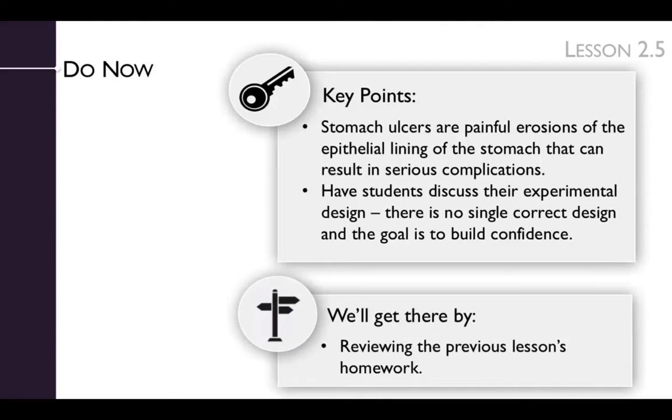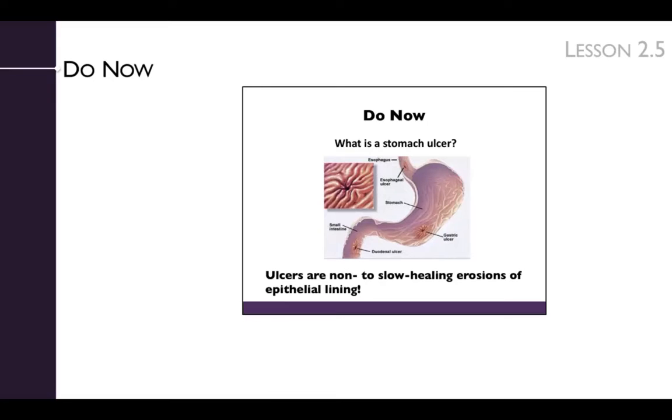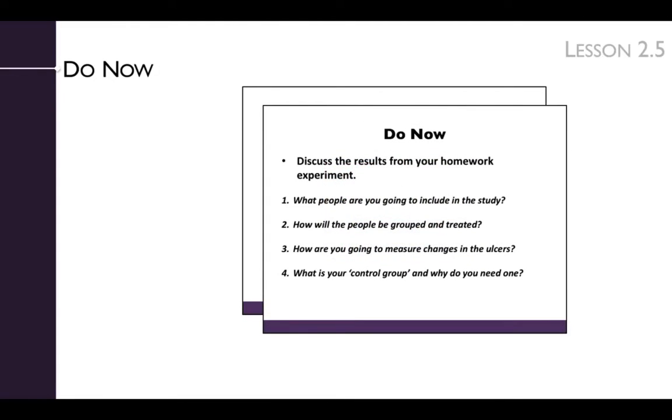We'll get there by reviewing the previous lesson's homework. The Do Now begins by reviewing the definition of an ulcer. Next, have the students use their homework worksheet to discuss how they approached the experimental design in their homework, including who they chose to include in the study, how they were treated, how they chose to observe changes in ulcers, and their control group. The process of experimental design can make some students uncomfortable. The point here is to give students time to practice, and to emphasize that there is no single correct design.